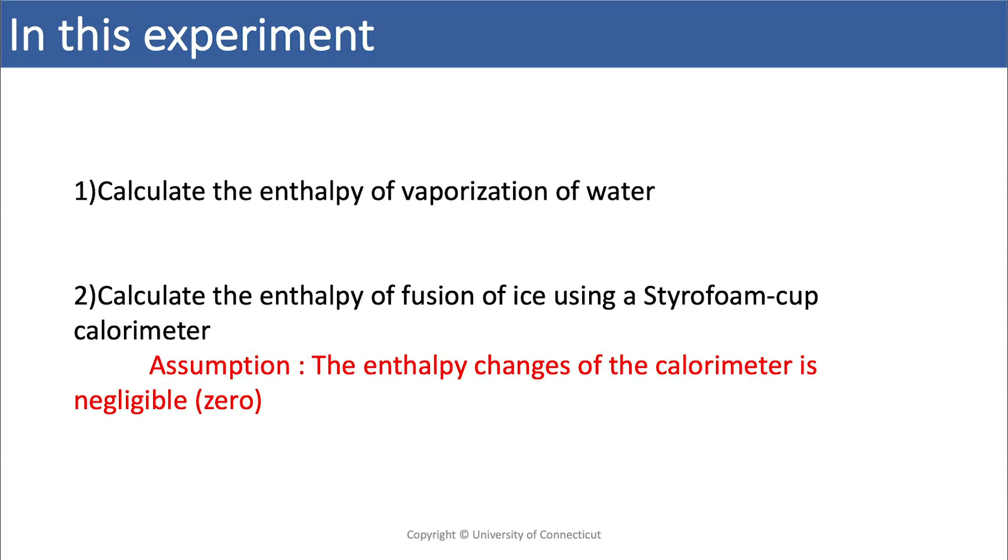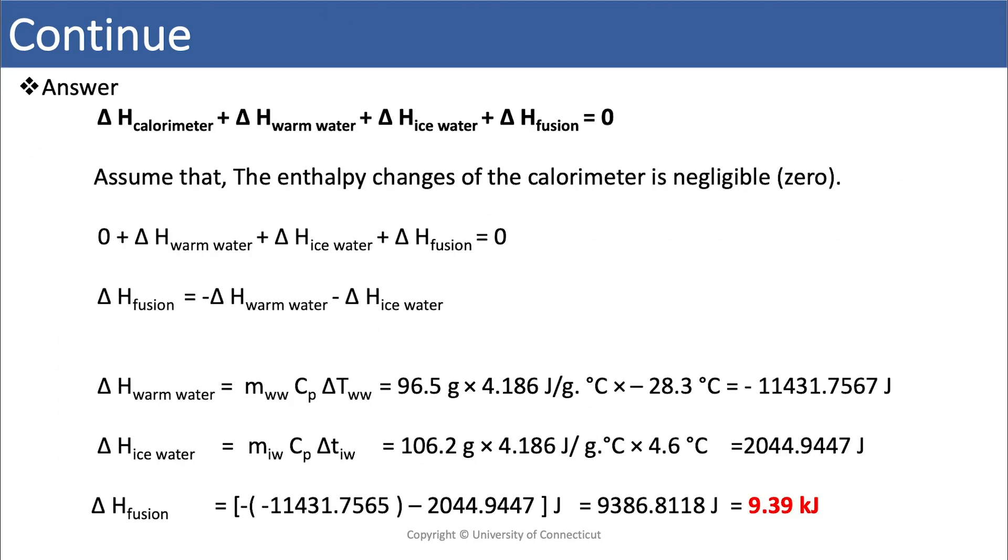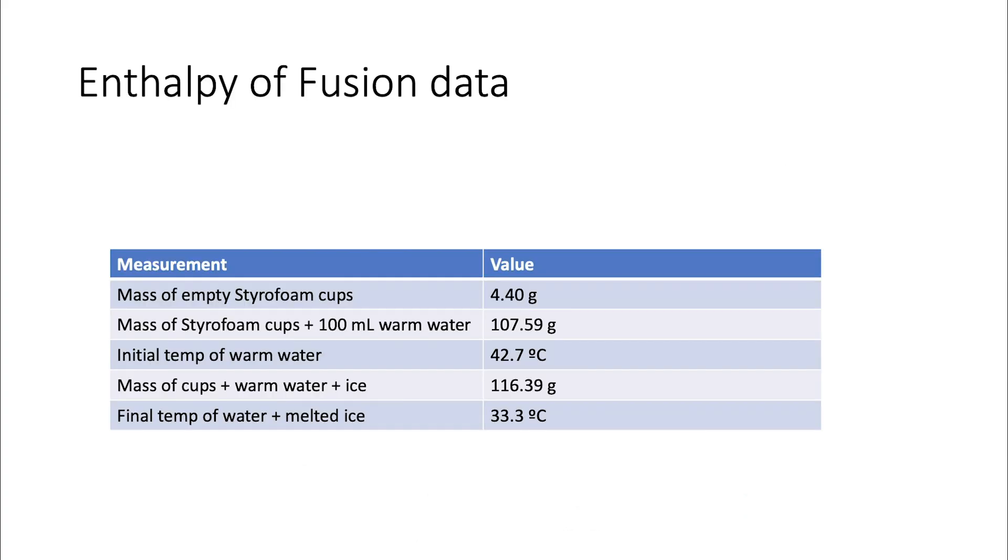We have to measure out all these things. We're going to assume that the calorimeter constant of our coffee cup calorimeter is zero. And so this would be an example of the calculations that you would do. Don't use these values, use the ones that we actually did measure values from.